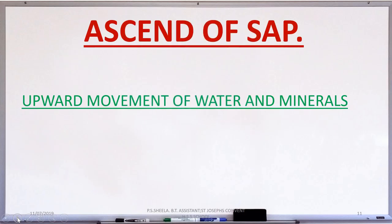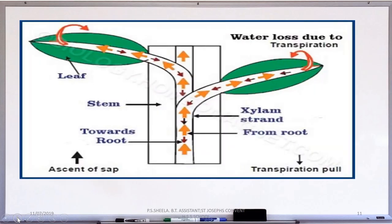The upward movement of water and minerals from roots to different parts of plants is called ascent of sap. A number of factors play a role in ascent of sap.